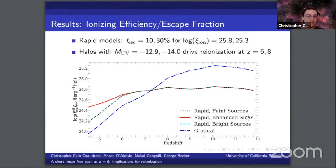To put some additional numbers to this, the typical UV magnitude of the sources that drive reionization in our rapid model is negative 12.9 and negative 14.0 at redshift 6 and 8 respectively.